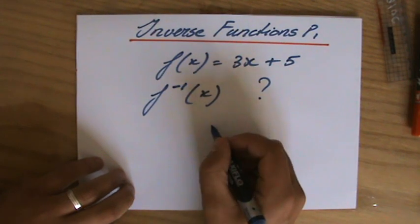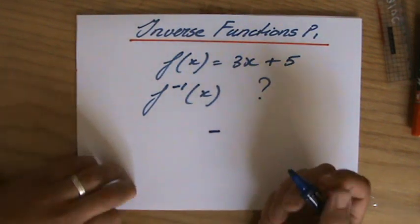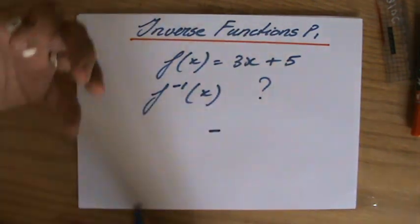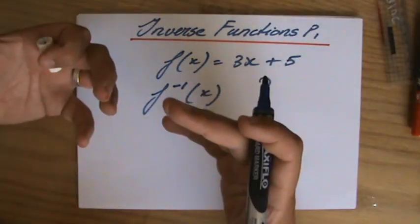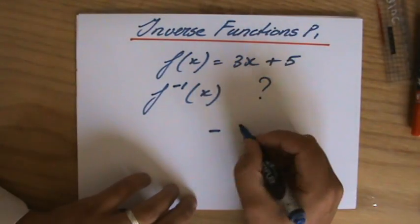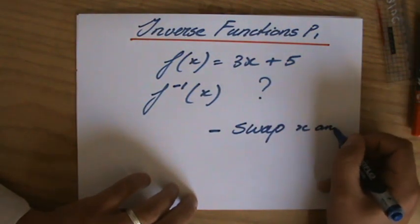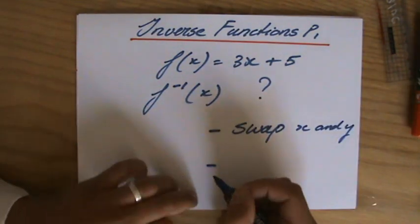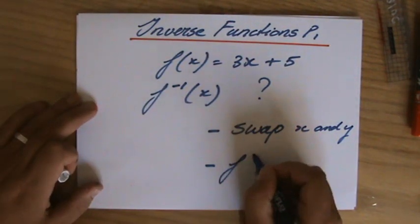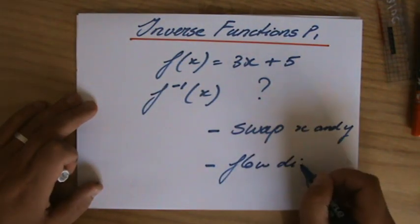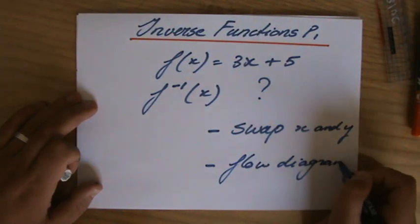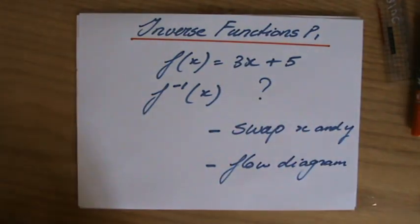Now I'm going to show you two methods. The first method is you're interchanging x and y, swapping x and y. The other method you can use is by making some sort of flow diagram. Personally I always use the first method, but I'd like to show you both anyway because they'll both work.